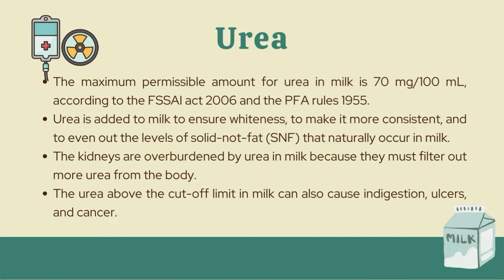The second adulteration is urea. The maximum permissible amount for urea in milk is 70 mg per 100 ml, according to the FSSAI Act 2006 and the PFL rules 1955. Urea is added to milk to ensure whiteness, to make it more consistent, and to even out the level of solid non-fat that naturally occurs in milk. Consequently, the kidneys are overburdened because they must filter out more urea. Urea above the permitted limit can also cause indigestion, ulcer, and cancer.